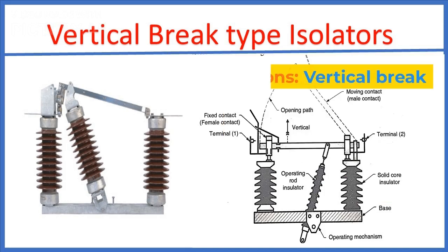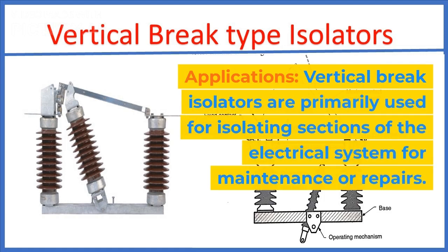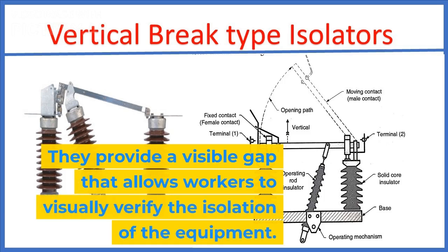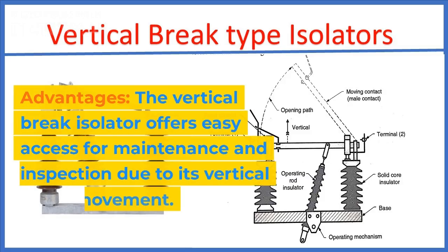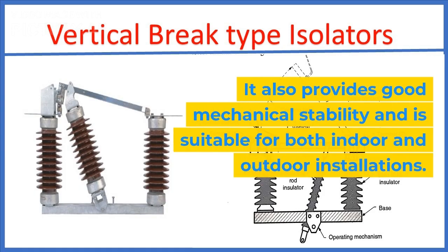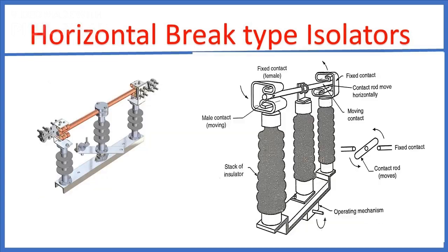Talking about its applications, vertical brake isolators are primarily used for isolating sections of the electrical system for maintenance or repairs. They provide a visible gap that allows workers to visually verify the isolation of the equipment. As an advantage, the vertical brake isolator offers easy access for maintenance and inspection due to its vertical blade movement. It also provides good mechanical stability and is suitable for both indoor and outdoor installations.